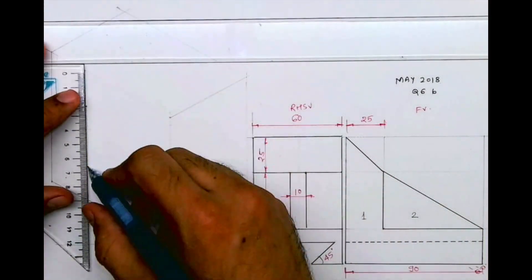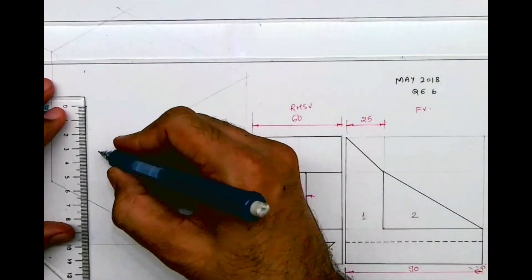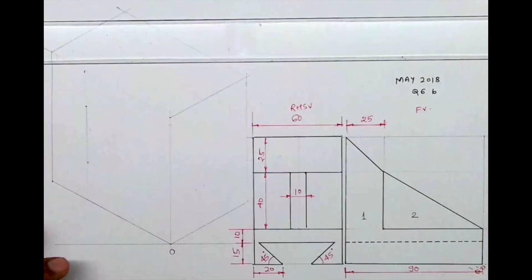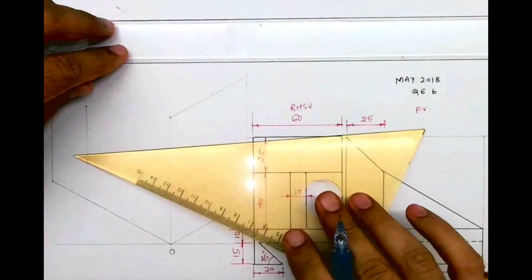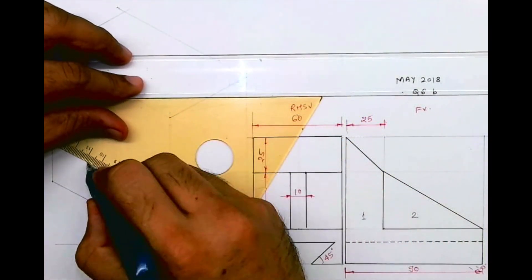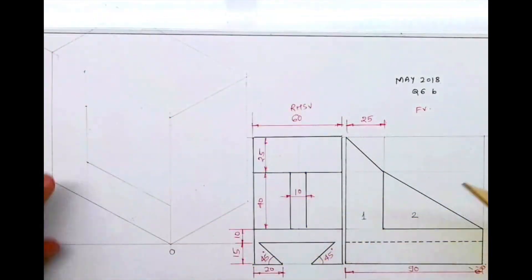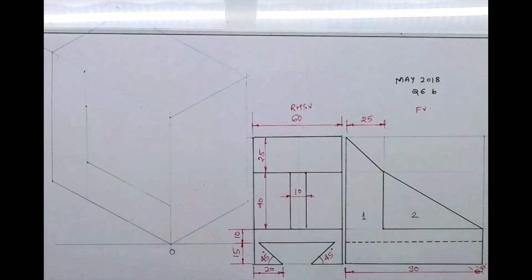Then I'll draw this vertical line. It is 40mm long. Then I will draw a line like this. So what we are doing, we are drawing part 1 as it is.